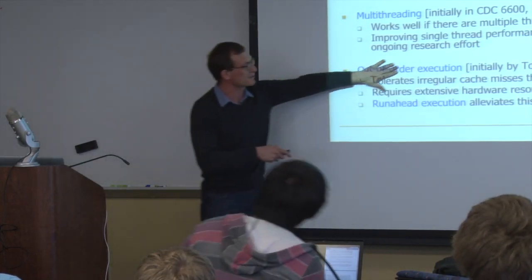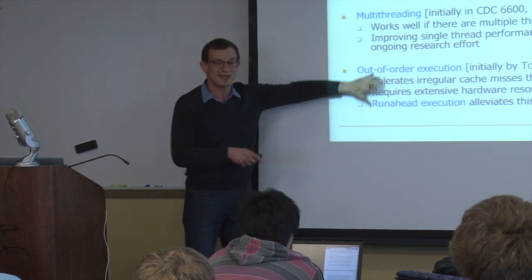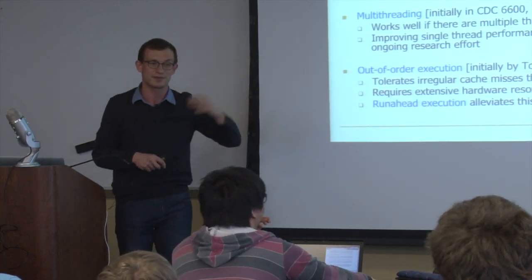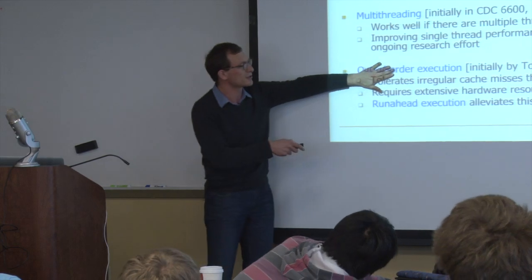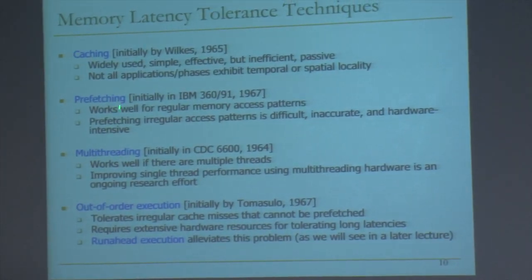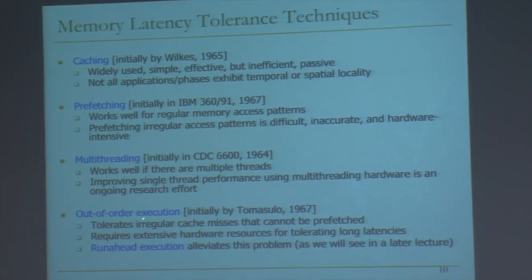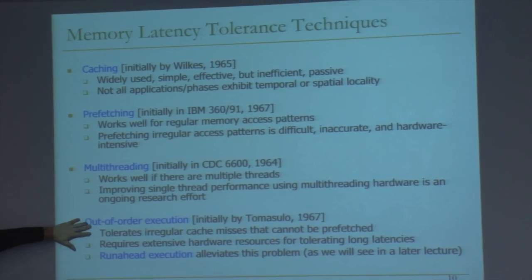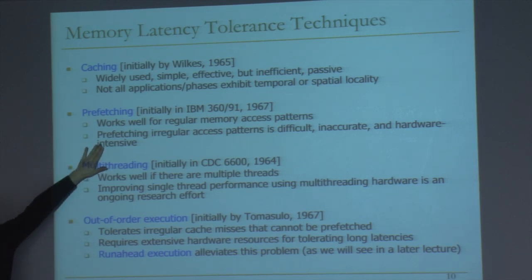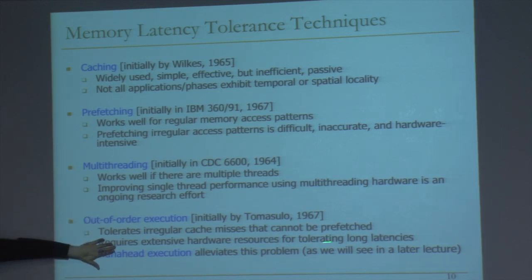Out-of-order execution — originally a different form was in the CDC 6600, but Tomasulo's algorithm was more elegant. This tolerates irregular cache misses that cannot be prefetched. The biggest benefit of out-of-order execution is tolerating this kind of cache miss. If you can prefetch it simply, great — use a prefetcher. But if you cannot prefetch it, out-of-order execution is a good way to tolerate it. The problem is it requires extensive hardware resources for tolerating long latencies.